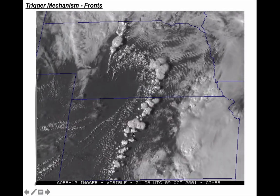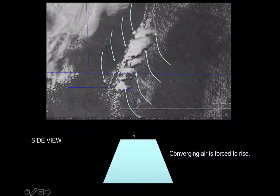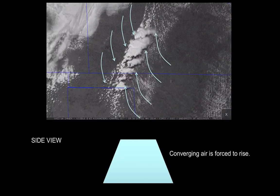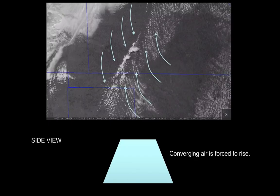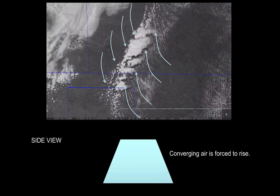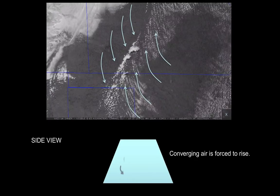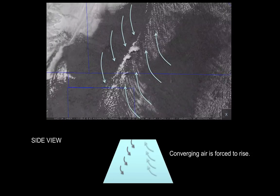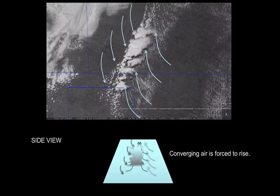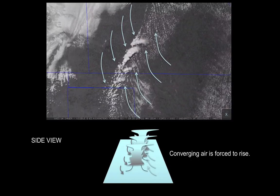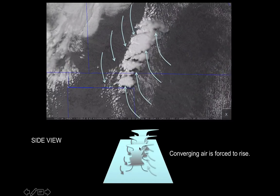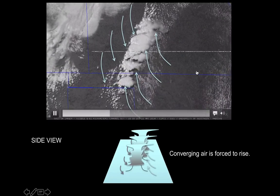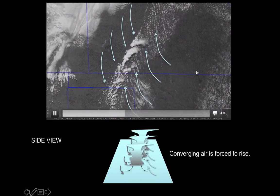Here's another example, in the panhandle of Oklahoma, Texas, and parts of Kansas — two air masses colliding. If air comes from one direction on one side and another direction on the other, when they meet in the middle, air is forced to ascend. As air ascends, a thunderstorm forms. Surface convergence makes that happen.